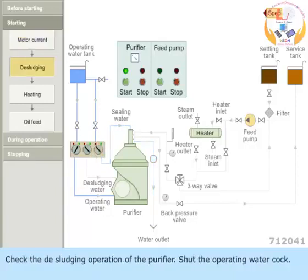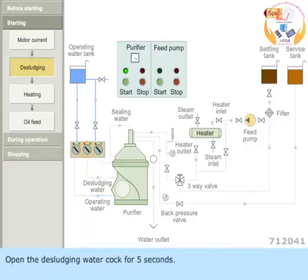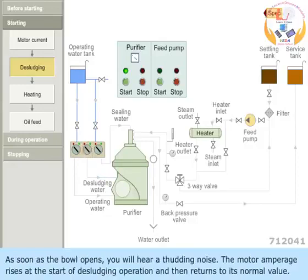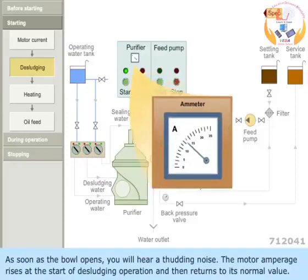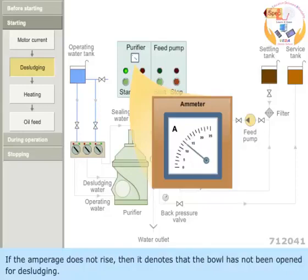Check the desludging operation of the purifier. Shut the operating water cork. Open the desludging water cork for 5 seconds and shut the cork. As soon as the bowl opens, you hear a thudding noise. The motor amperage rises at the start of desludging operation and then returns to its normal value. If the amperage does not rise, then it denotes that the bowl has not been opened for desludging.